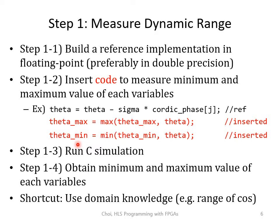There is one shortcut. If you have full knowledge of the application, you may choose to skip step one. For example, we know that the value of data is going to be somewhere between pi over 2 and negative pi over 2, and the value of cosine and sine is going to be somewhere between 1.0 and negative 1.0. If you have such knowledge, go ahead and use it. But if you're not sure what you're dealing with, you probably want to follow these steps and measure the dynamic range.